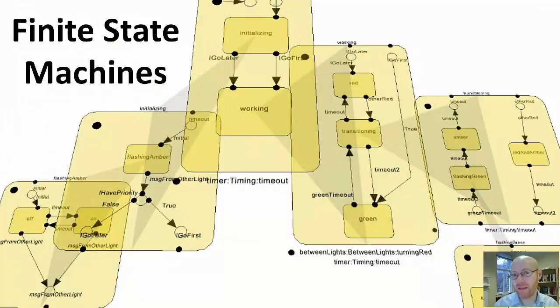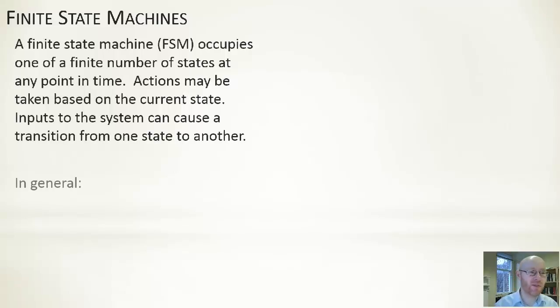What I think is an improvement on those is what's known as finite state machines or FSMs. A finite state machine is basically a process that can be in one of a finite number of states at any point in time. When we're in a particular state, we have an action associated with that state.